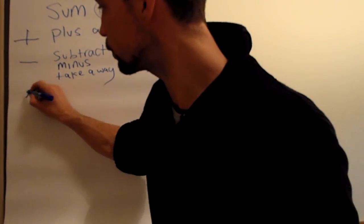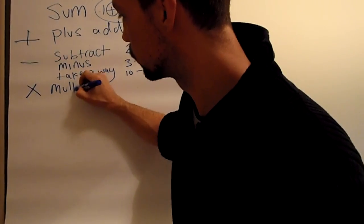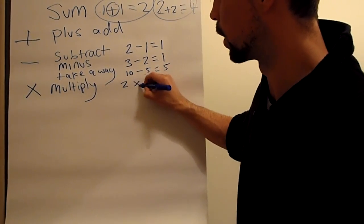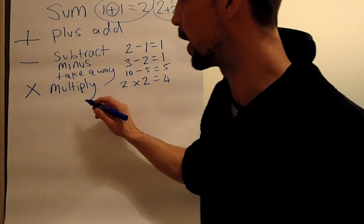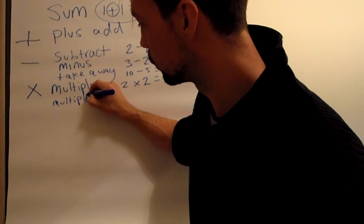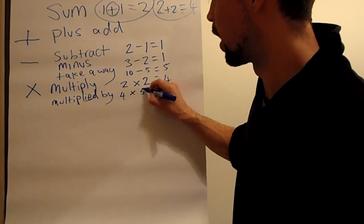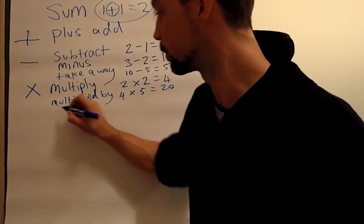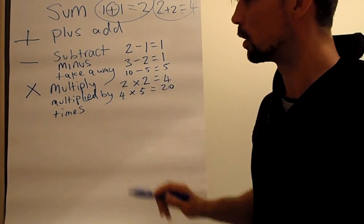The next one is called multiplying. So 2 multiplied by 2 equals 4. We can say multiplied by, so 4 multiplied by 5 equals 20. Also we can call it times: 2 times 2 equals 4, 4 times 5 equals 20.